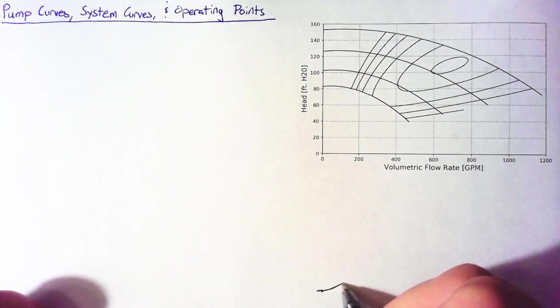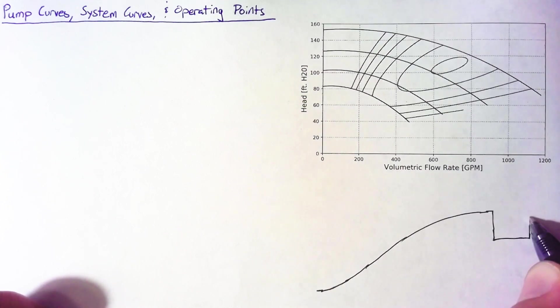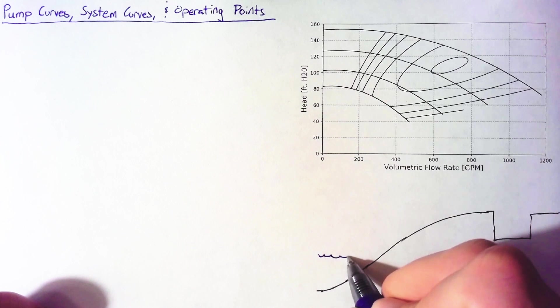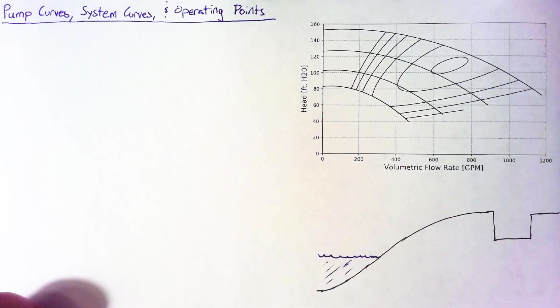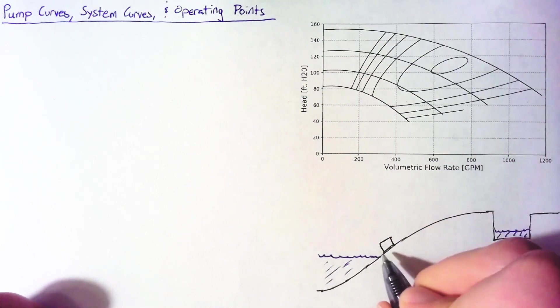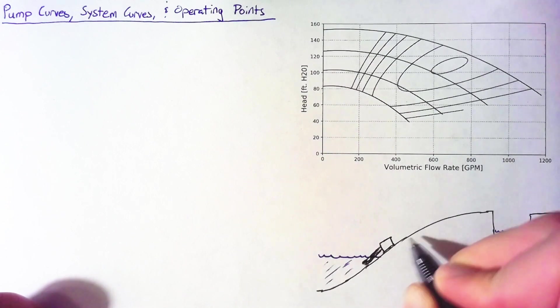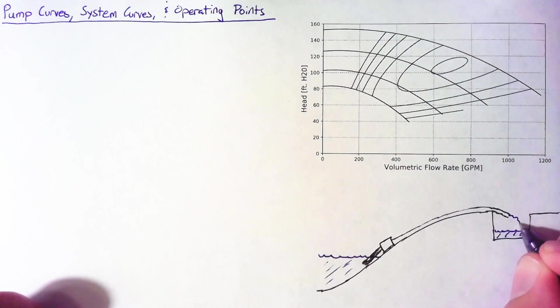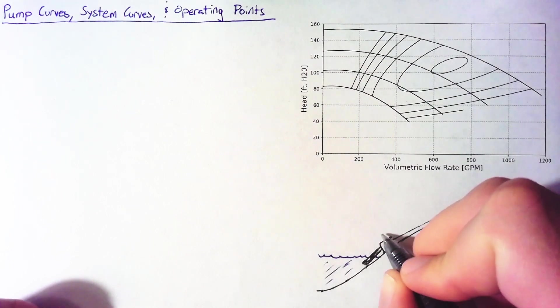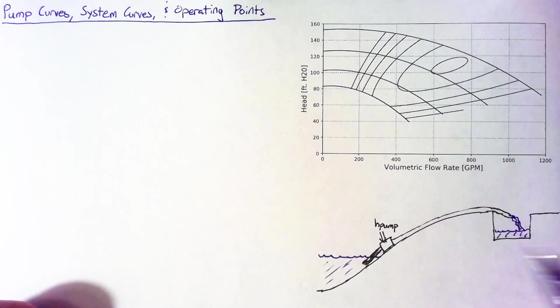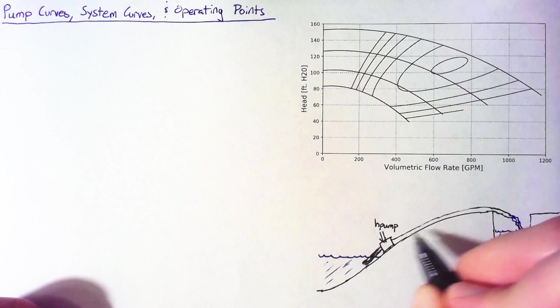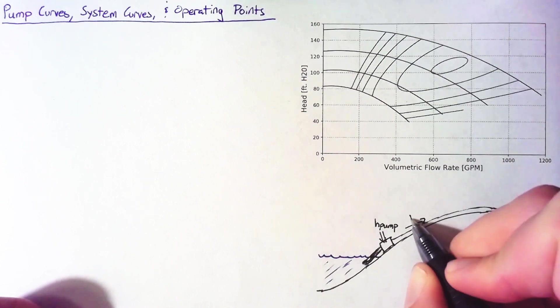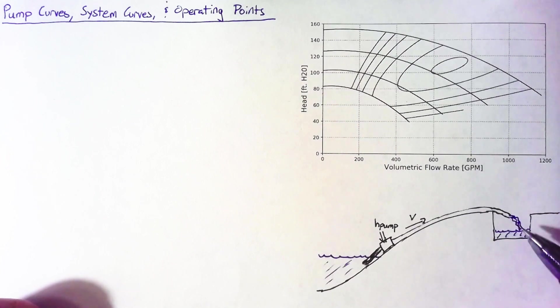Let's define the problem that we're going to look at to investigate these concepts. Our goal this time around is going to be to fill a reservoir from this lake that we have down here. In order to do that, we're going to put a pump down by the lake, feed a pipe into the lake, and then have a pipe from the pump up to our reservoir.